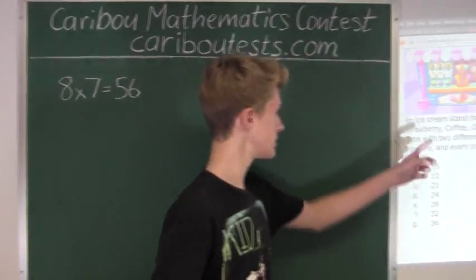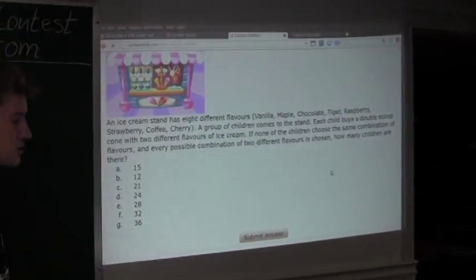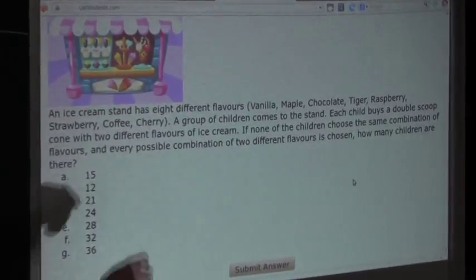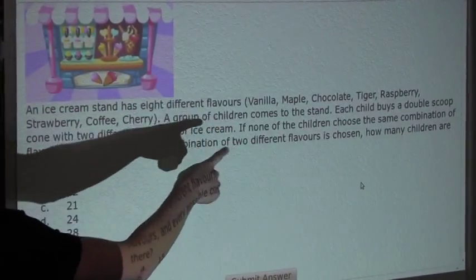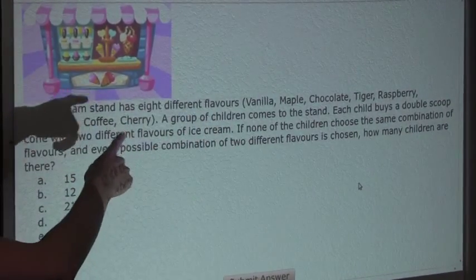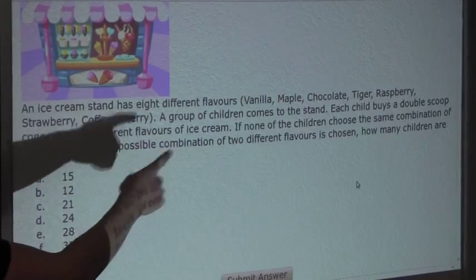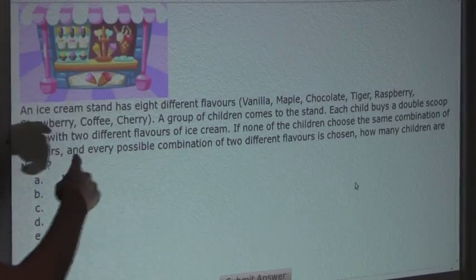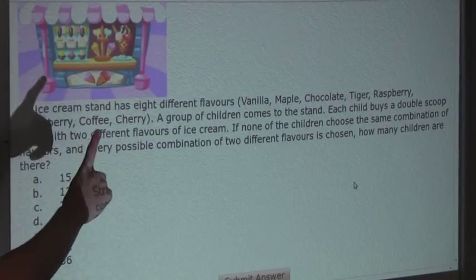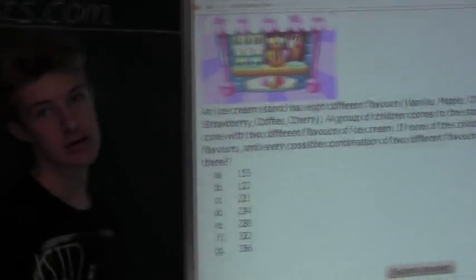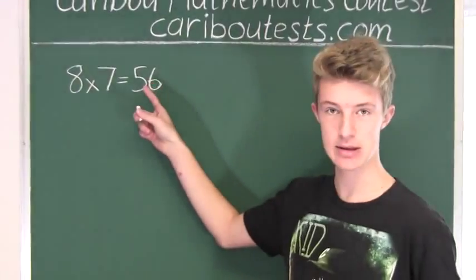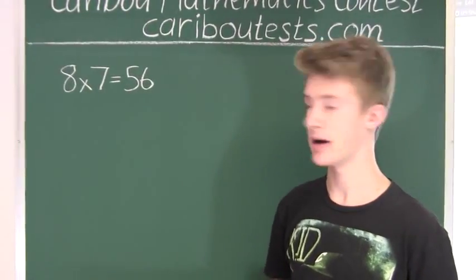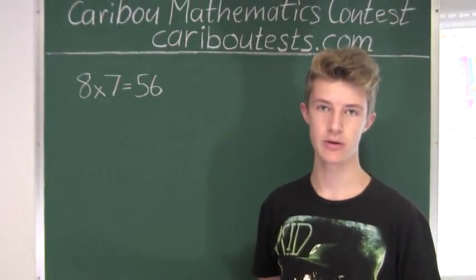But, now in this question, there is no difference whether, for example, you have first vanilla then maple, or first maple and then vanilla. It is all just each pair of flavors only counts as one combination. Therefore, we must take the 56 and divide that by 2 to find the real number of combinations.